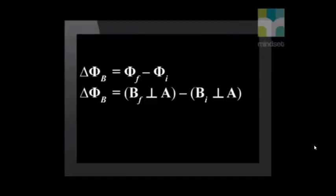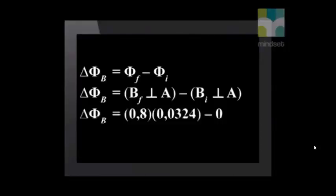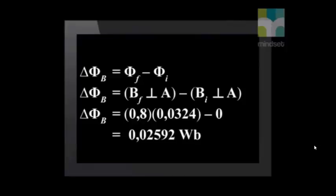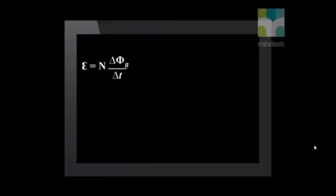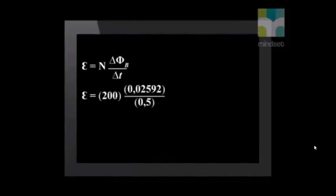We calculate the final magnetic flux minus the initial magnetic flux. Remember, the magnetic flux is the magnetic field strength multiplied by the area. The final magnetic field strength is 0.8 multiplied by the area of 0.0324 square meters, minus 0 since the initial magnetic field is 0. The answer is 0.02592 Weber. Now we calculate the magnitude of the induced EMF. We leave the negative out of the equation because that determines direction and we only ask for magnitude. Substituting all values, the answer is 10.368, which we round off to 10.37 volts.